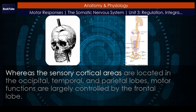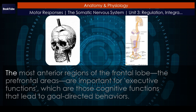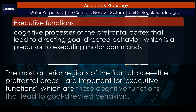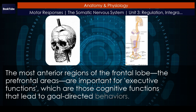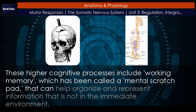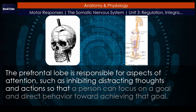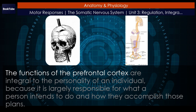Whereas the sensory cortical areas are located in the occipital, temporal, and parietal lobes, motor functions are largely controlled by the frontal lobe. The most anterior regions of the frontal lobe, the prefrontal areas, are important for executive functions, which are those cognitive functions that lead to goal-directed behaviors. These higher cognitive processes include working memory, which has been called a mental scratch pad, that can help organize and represent information that is not in the immediate environment. The prefrontal lobe is responsible for aspects of attention, such as inhibiting distracting thoughts and actions so that a person can focus on a goal and direct behavior toward achieving that goal. The functions of the prefrontal cortex are integral to the personality of an individual, because it is largely responsible for what a person intends to do and how they accomplish those plans.